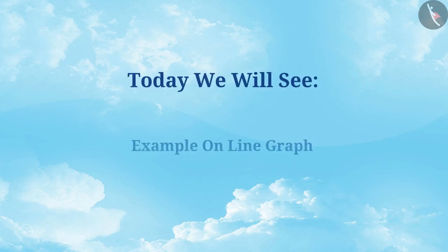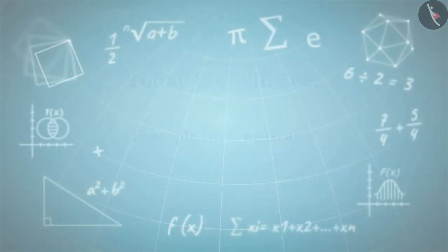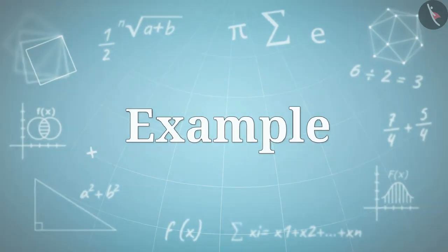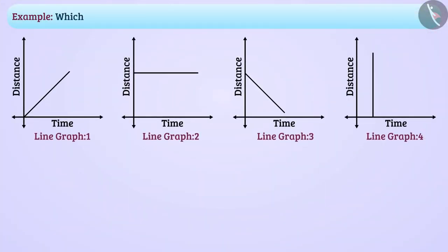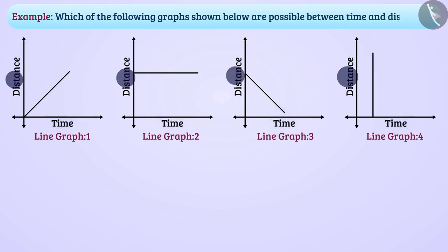Today, we will see an example on line graph. Which of the following graphs shown below are possible between time and distance? In the first line graph, distance is also increasing with time. Is this possible between time and distance? Think, think!